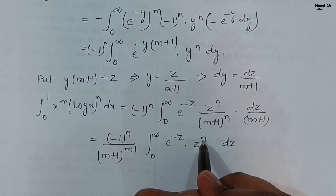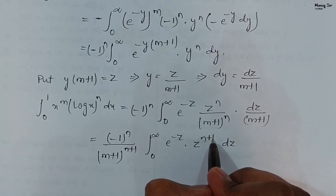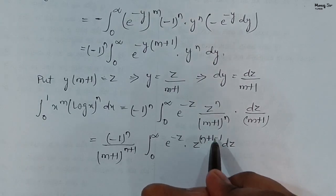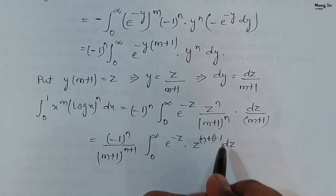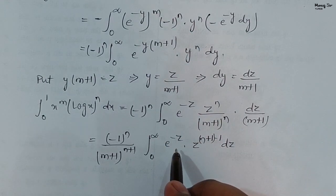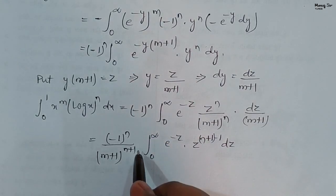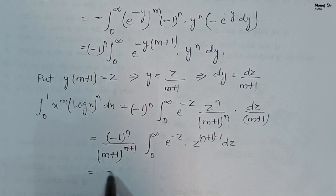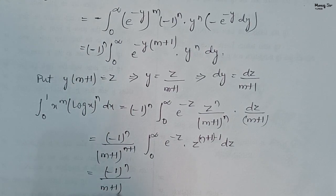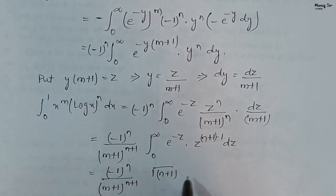Here we have z to the power n. We can write this as z to the power (n+1−1). This whole integral — from 0 to infinity of e^(−z) times z^(n+1−1) dz — is the gamma function, that is gamma of (n+1).